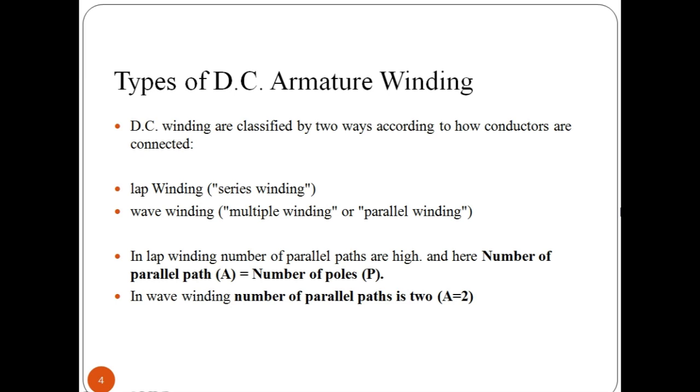DC armature winding is of two types: lap winding and wave winding. In lap winding, number of parallel paths are high and here number of parallel paths is equal to number of poles.